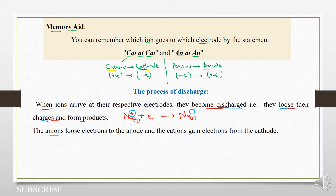Anions will lose electrons at the anode and the cations will gain electrons at the cathode. This is an example of the cation gaining electrons at the cathode.